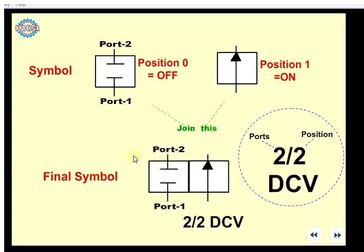This is a complete symbol — this is the final symbol. It is very simple: Port 1 and Port 2. There are two ports. Here is the S to square box — one square box and two square boxes. This is two by two DC. We have two by two DC.